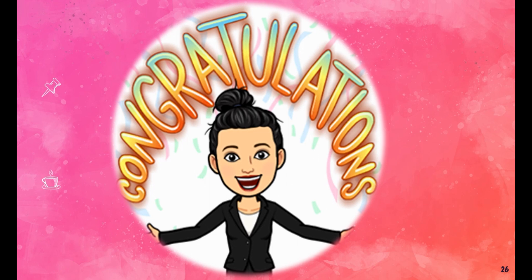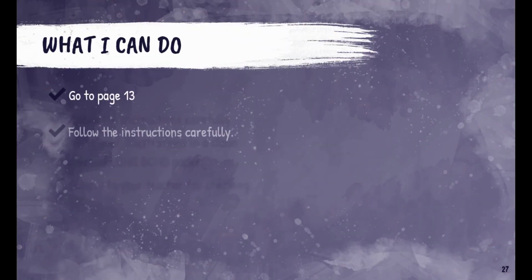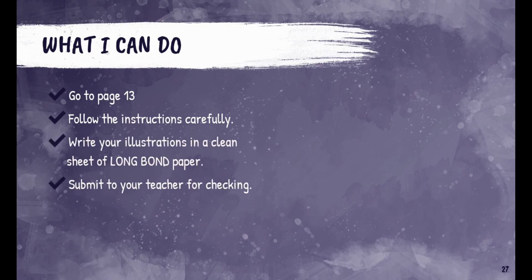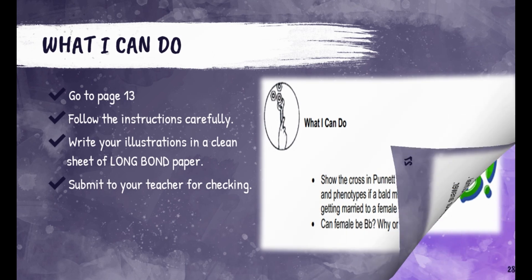Congratulations! Now you know about sex-limited and sex-influenced traits. To make sure that you apply the lesson you just learned, go to page 13 and answer 'What I Can Do.' Show the cross in a Punnett square and identify both genotypes and phenotypes if a bald man whose father was normal is getting married to a female whose both parents are normal. Can a female be bald? Why or why not? Support your answer. Write your illustrations on a clean sheet of long-bond paper and submit to your teacher for checking. Good luck!